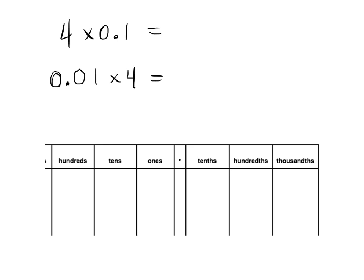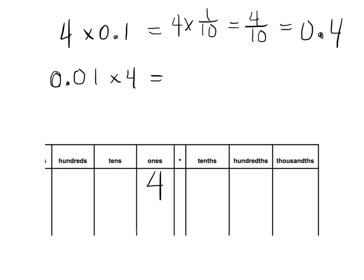We're going to start with a couple of examples. We begin with 4 times 1 tenth. So 4 times 1 tenth is going to look like this: 4 times 1 tenth, which is 4 tenths. And then 4 tenths is 0.4. The thing I want you to notice is we started out with a 4 right here, but when we multiplied by a tenth, it moved — I should put the decimal there — it moved to right here: 4 tenths.